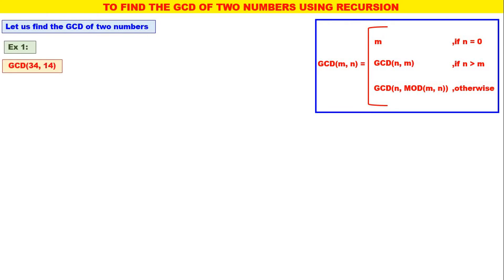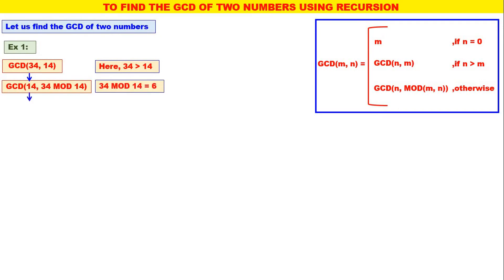Let us take example number one: GCD of 34, 14. In GCD of 34, 14, the second parameter 14 — is it equal to 0? No. And 34 is greater than 14. Therefore, we should call GCD of 14, 34 mod 14. What is 34 mod 14? 6. Therefore, this will be GCD of 14, 6.